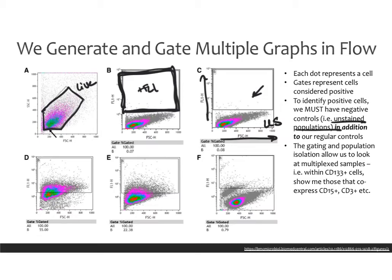The unstained population tells you that all your cells are landing here — so this is just background, not real staining. Anything above this is going to be considered positive for FL1. That makes your unstained population key. Without an unstained population that you can show decided your gating strategy, your FACS is basically worthless. In addition to that, you of course have to have your normal experimental controls. If you treated the cells, you have to have a control for your treatment; if you did a time course, you have to have a control for that. The unstained control is what allows you to draw the proper gates.